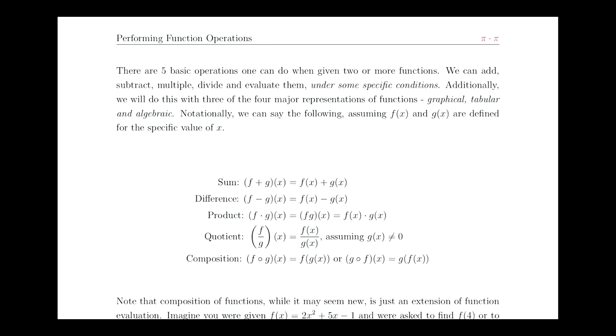So addition of functions is pretty simple. The notation for this is f plus g of x, and that means that whatever two functions we have, we're adding them. Difference, the notation is f minus g of x, and that means that we're subtracting the two functions, f of x minus g of x. And then for the product, we have f times g of x. Another way of writing that is the same thing without the dot in the middle, and that just means f of x times g of x.